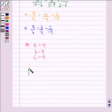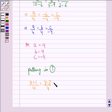Putting these values in equation 1, we get x plus 1 divided by 4 is equal to y minus 3 divided by 4 is equal to z plus 2 divided by minus 4, which is the required equation of line.